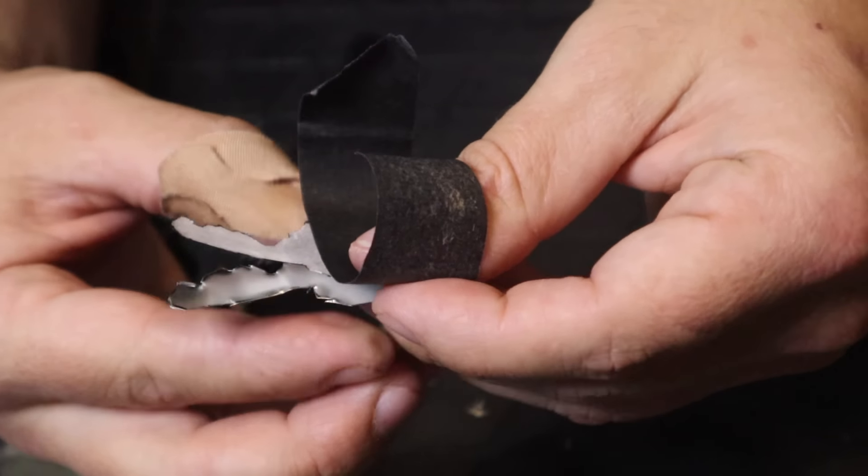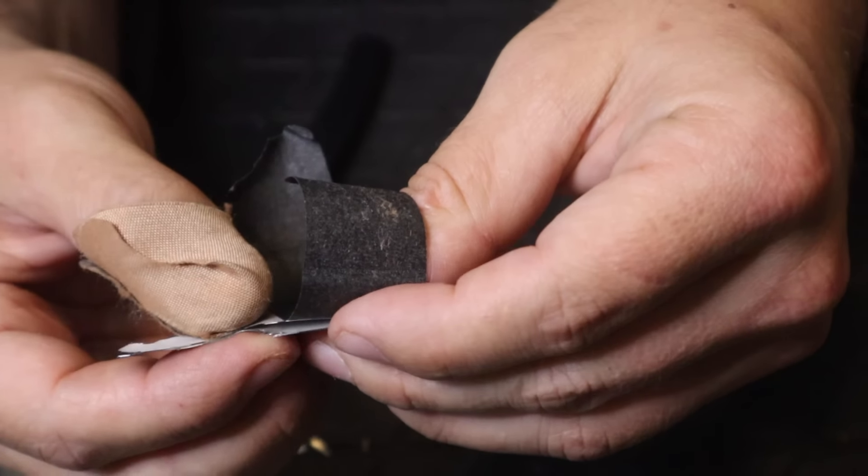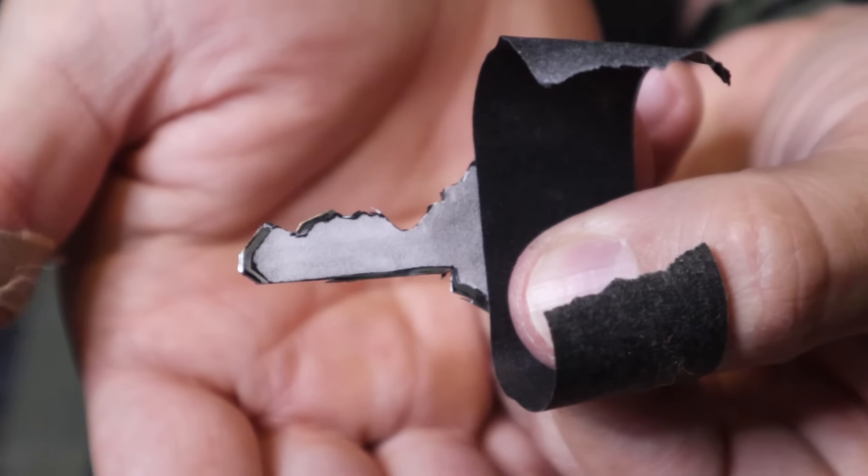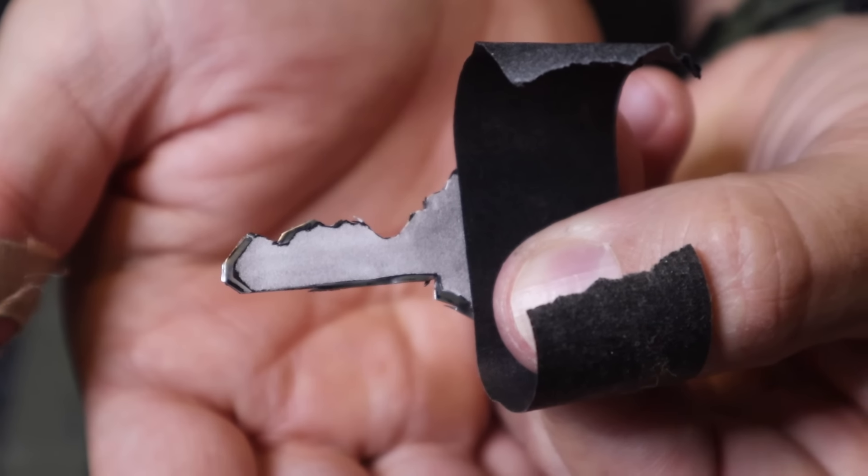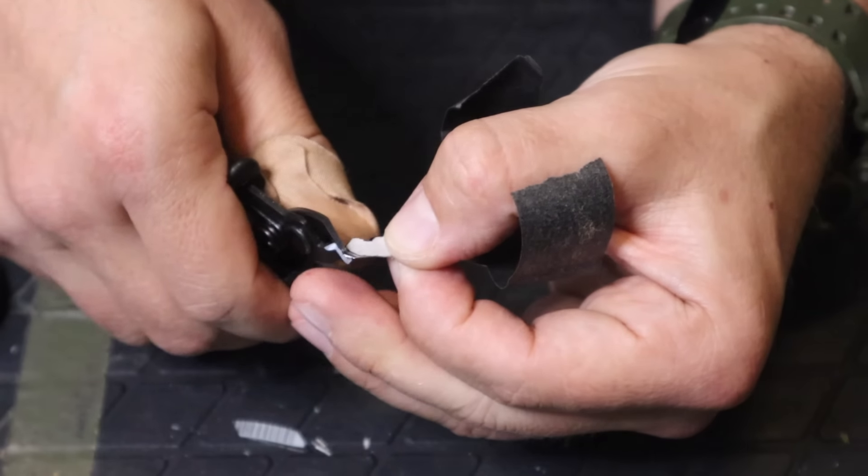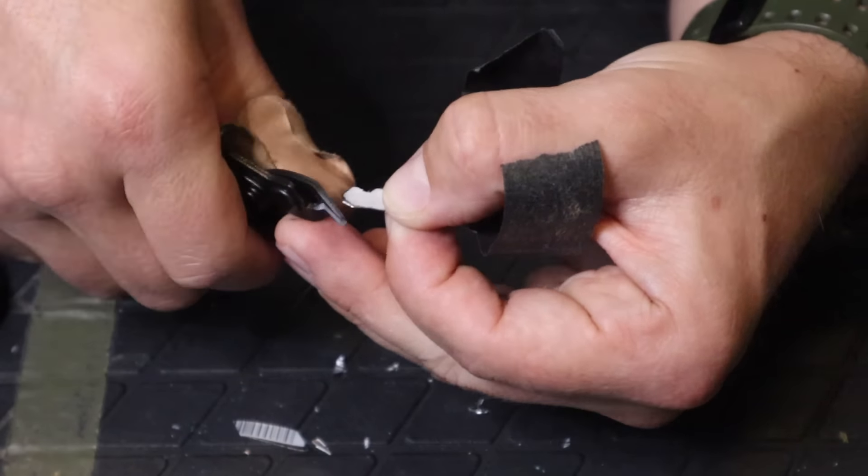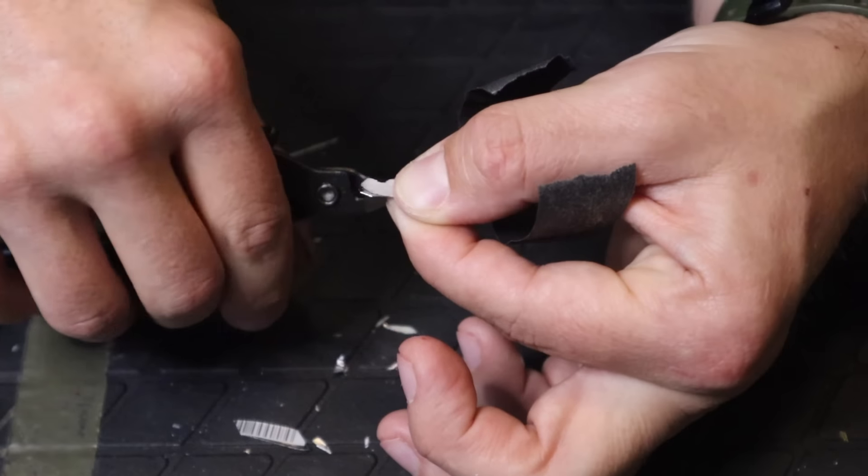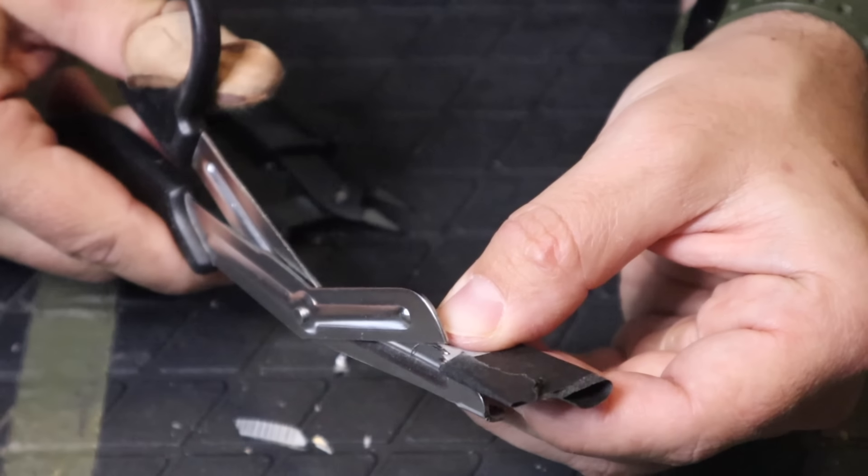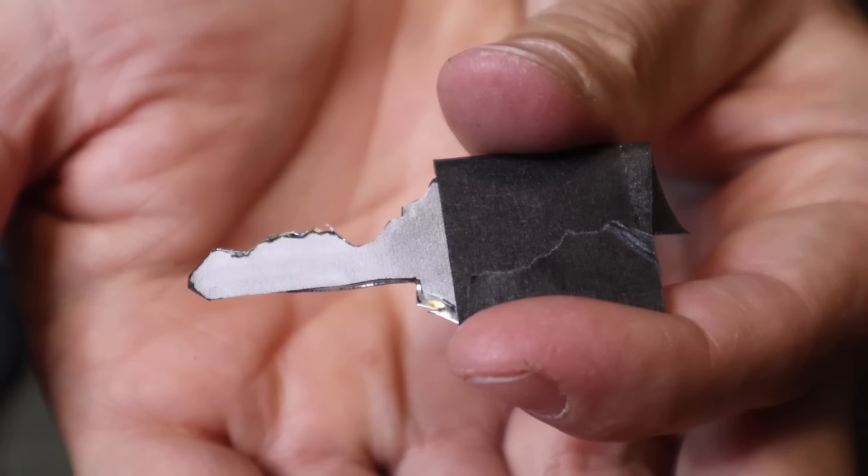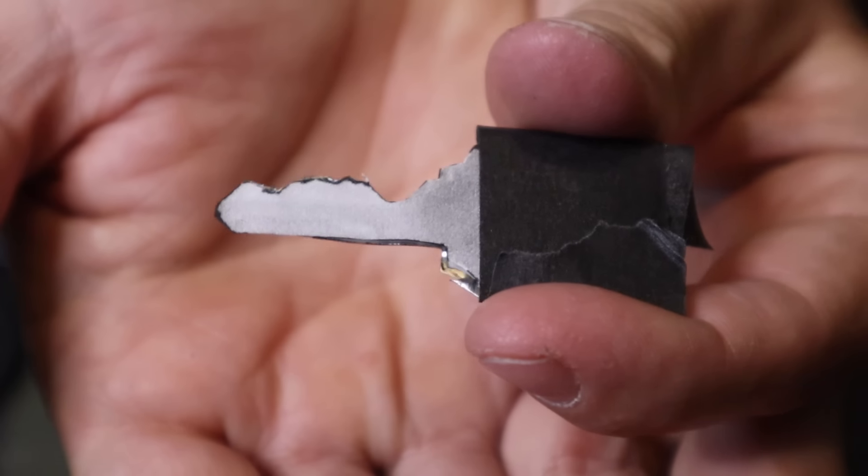We can also double-check our work by taking our stencil that we removed and placing it back onto our key to see how the stencil lines up with our initial cuts. It's better to leave a little bit of material on that piece of metal and then take away. We can always take away, but we can't add on. So we want to double-check our work to make it as precise as possible.